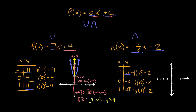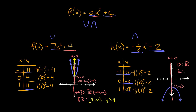Now let's graph this. We plot negative 1, negative 2.3 — about there; then 0, negative 2 — the y-intercept and vertex right where we expected; and then 1, negative 2.3. Connect the dots and our graph opens downward. The vertex is at (0, negative 2), the axis of symmetry is at x equals 0, the domain is all real numbers, and the range goes from negative 2 down to negative infinity — or y is less than or equal to negative 2.